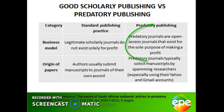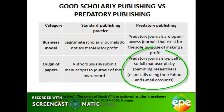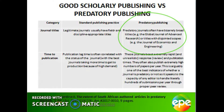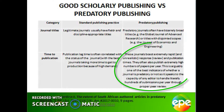Predatory journals exploit the author-pays business model, charging authors to have their articles published, whereas legitimate journals do not exist solely for profits. Spam emails are often used to solicit articles from authors, as opposed to authors selecting their publishing venue on their own. Predatory journals often have long names that include the words 'international' or 'global.' Another strategy is to closely match the title of a legitimate journal — such journals are referred to as being hijacked. Good journals often take time to reach production, whereas predatory journals often offer rapid review and fast publication.